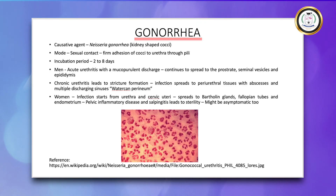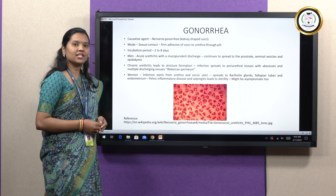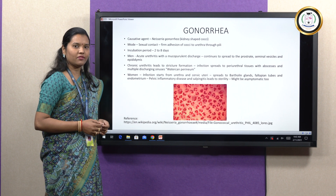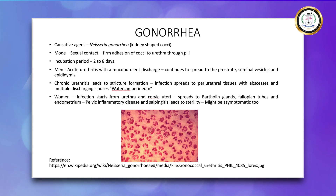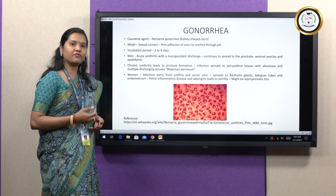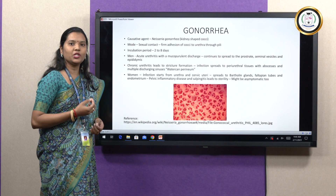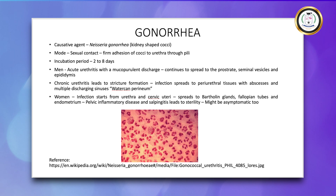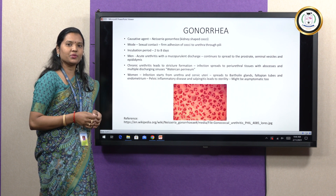Gonorrhea is a venereal disease, meaning it is a sexually transmitted disease acquired through sexual contact. The causative agent is Neisseria gonorrhoeae, which is a kidney-shaped diplococci — meaning the cocci exist in pairs. The infection starts when the cocci adhere to the urethral and mucosal surfaces. The adhesion happens by pili, and it is so firm that even micturition after exposure does not clear the bacteria from the urethral surfaces. The organism has an incubation period of 2 to 8 days, and it spreads into the intercellular spaces, reaching the connective tissues in just 3 days.